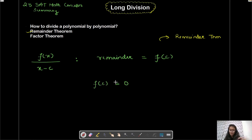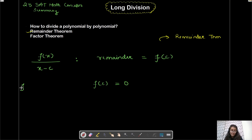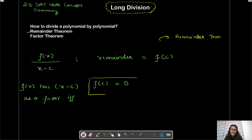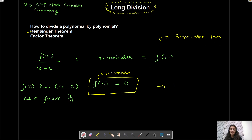f(c) will equal zero if and only if polynomial f(x) is divisible by (x − c). And if f(x) is divisible by (x − c), then we can say that (x − c) is a factor of f(x). So f(x) has (x − c) as a factor if and only if f(c) = 0. Since f(c) is the remainder, if you're dividing something by its factor, you get zero as the remainder.